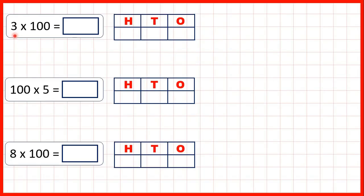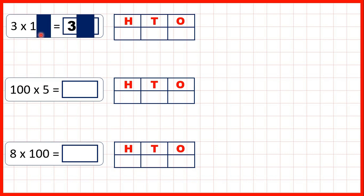Now we need to multiply a single-digit number by 100. First we have 3 times 100. That's 300 because 3 times 1 is 3, and then if we have two end zeros in the question we have two end zeros in our answer.